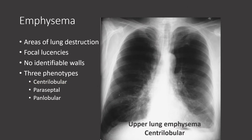On chest x-ray it can be difficult to identify emphysema, so we look for secondary signs such as increased lung volumes. Notice how large the lung parenchyma is, and how the upper lung zones appear very dark compared to the lower lung zones because the lung is destroyed superiorly. As a result, vessels in the upper zones are not well seen, whereas in the lower lung zones vessels are much easier to identify. This is central lobular upper lung zone emphysema.